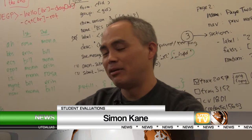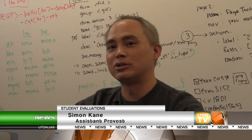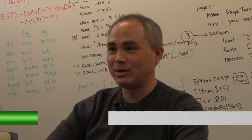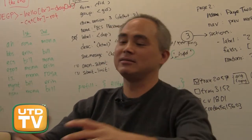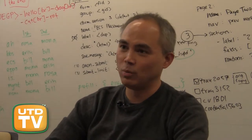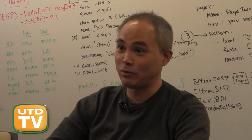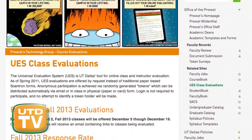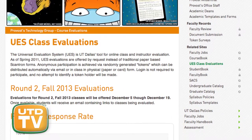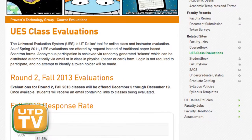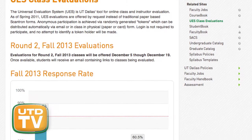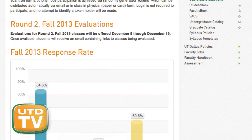We used to do paper evaluations. Those paper evaluations were extremely costly. They weren't even processed here — we actually had to box the materials up and send them to Washington, the state of Washington. The new universal evaluation system was designed in-house at UTD and saves the university at least $20,000 every year, in addition to providing much quicker results.